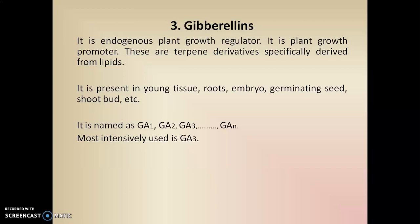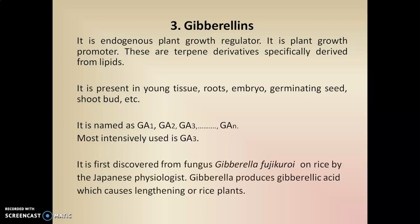The most commonly and intensively used gibberellin is GA3. Regarding its discovery, gibberellin was discovered from the fungus Gibberella fujikuroi, found on rice, by a Japanese physiologist. He found that this fungus produces gibberellic acid, which is responsible for lengthening of the rice plant — that is, it increases the size or length of the rice plant.